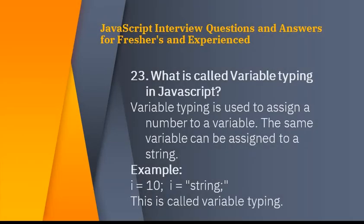What is variable typing in JavaScript? Variable typing is used to assign a number to a variable, and that same variable can also be assigned a string. For example: i = 10, then i = 'string'. This is called variable typing.